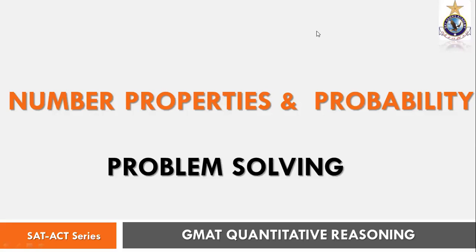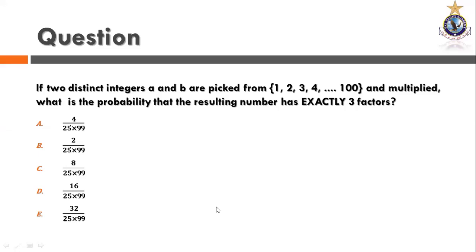Can you see my screen? Okay. So this is all about number properties and probability — a combination of two types of problems. The problem is very simple: if two distinct integers a and b are picked from 1 through 100 and multiplied, what is the probability that the resulting number has exactly three factors? We have five answer choices.